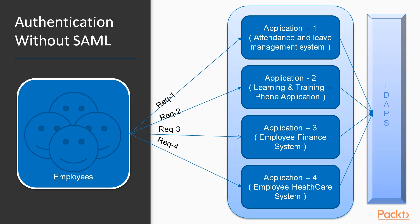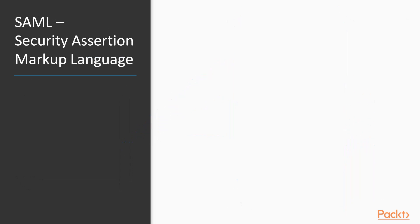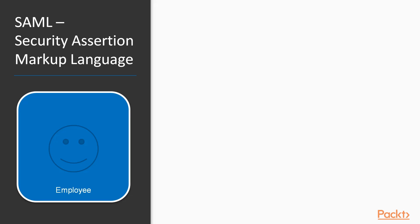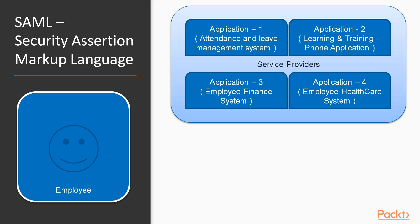To resolve such issues, SAML comes in. SAML is Security Assertion Markup Language, based on XML. Now, the same scenario applies to several employees. The applications — attendance, learning, finance, and healthcare — we call them service providers in SAML. So as an employee, if I want to log into the attendance and leave management system, that application is a service provider providing the service. Similarly, the learning and training application is another service provider.